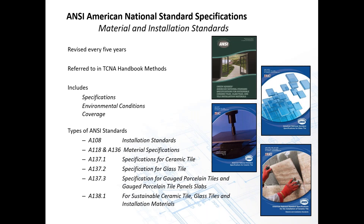There are a variety of ANSI booklets in the tile industry. A108 is probably the most commonly known — it covers installation standards. A118 and A136 are for material specifications. A137.1 is a specification for ceramic tile as a product. A137.2 is for glass tile. A137.3 is the standard for gauge porcelain tile and gauge porcelain tile panels slash slabs. Last is A138.1, which is the sustainability ANSI document for ceramic tile, glass tile, and installation materials.